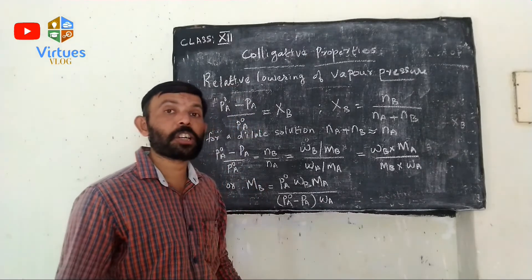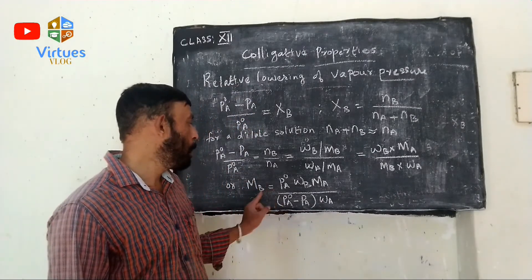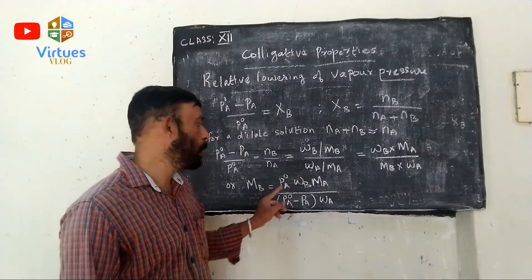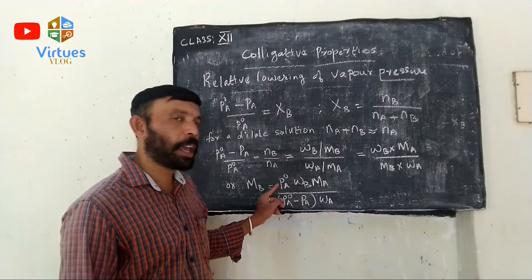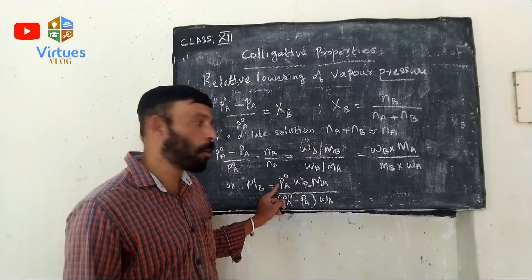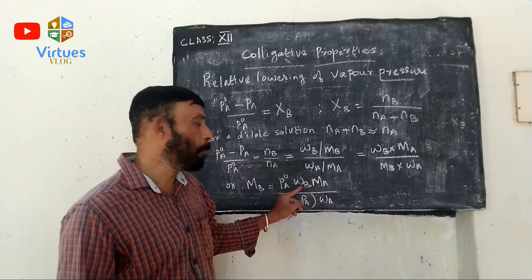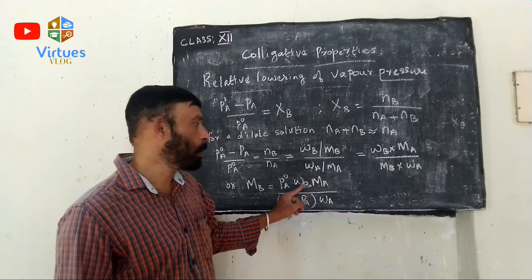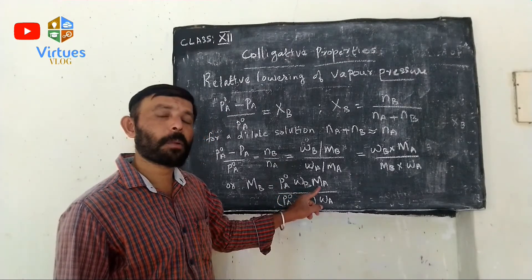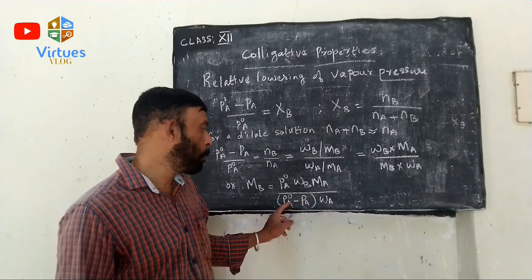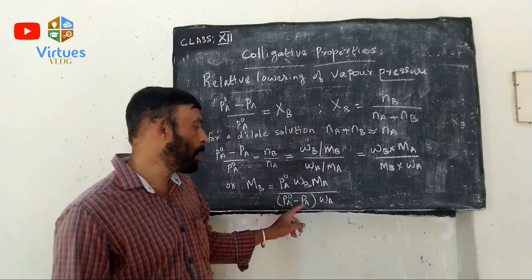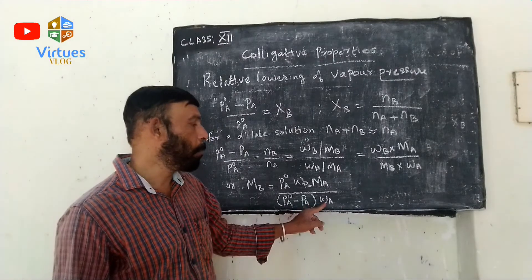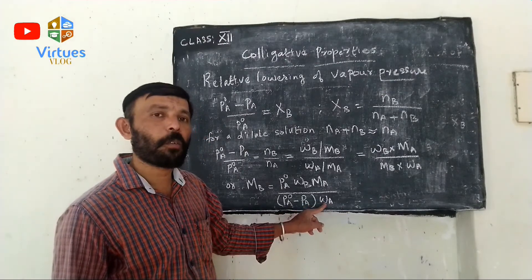Let us identify the terms in this formula: MB is the molecular mass of the solute. P0A is the vapor pressure of the pure solvent. WB is the weight of the solute. MA is the molecular mass of the solvent. P0A minus PA is the lowering of vapor pressure. WA is the weight of the solvent.